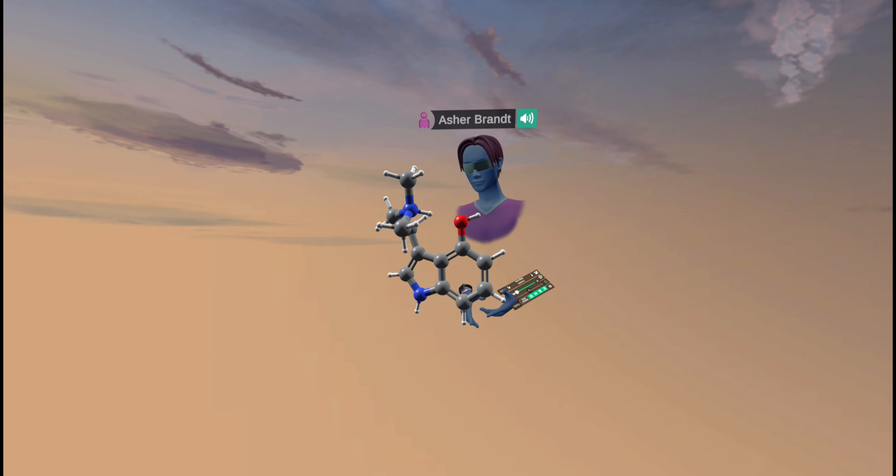So the concept of bioisosteric searching is the idea that we can create a similar chemical entity to the one that we have, which is psilocin, and we can make derivatives of that that behave biologically similar to psilocin.